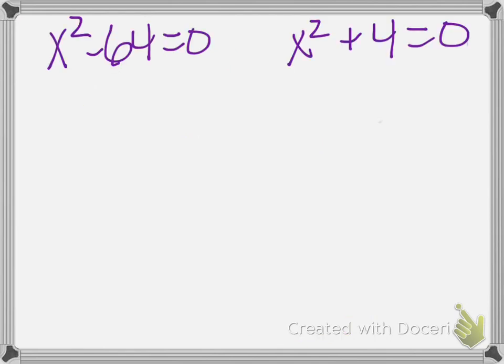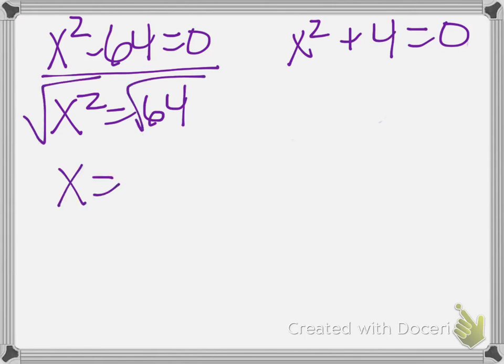Let's look at another way to do this. So let's try and solve one. If I have x squared minus 64 equals 0, I could do x squared equals 64, take the square root of both sides, so x actually equals plus or minus 8.